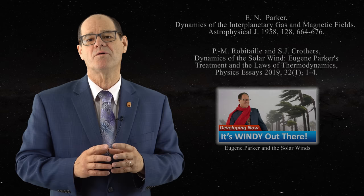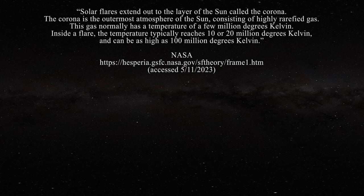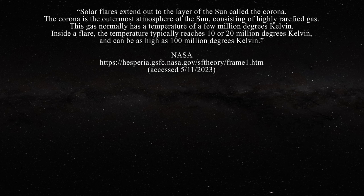Here is what NASA writes: 'Solar flares extend out to the layer of the Sun called the corona. The corona is the outermost atmosphere of the Sun, consisting of a highly rarefied gas. This gas normally has a temperature of a few million degrees Kelvin. Inside a flare, the temperature typically reaches 10 or 20 million degrees Kelvin and can be as high as 100 million degrees Kelvin.'